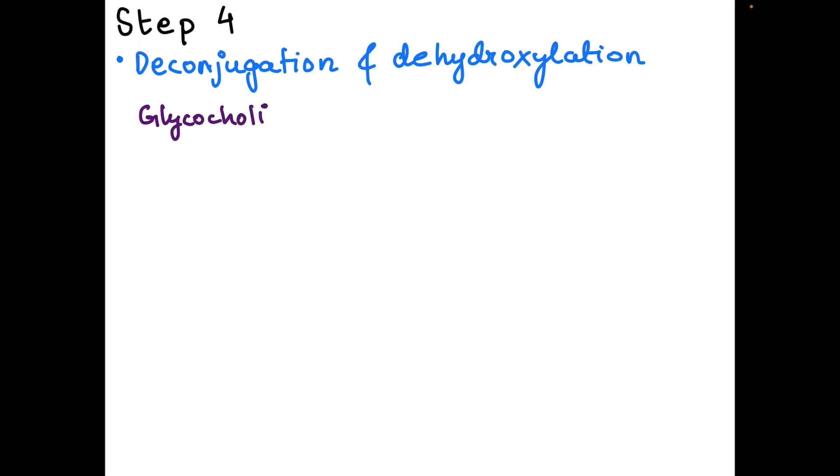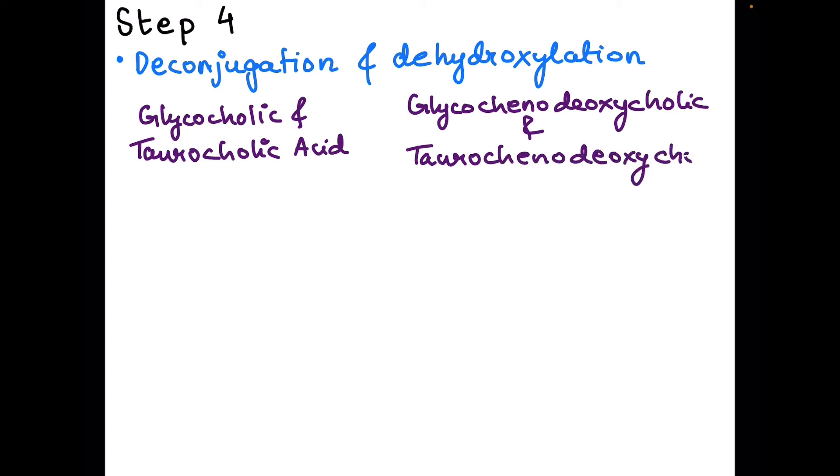The last and final step is deconjugation and dehydroxylation. Let's see what happens in this step. Now we have glycocholic acid and taurocholic acid, and glycochenodeoxycholic acid and taurochenodeoxycholic acid.